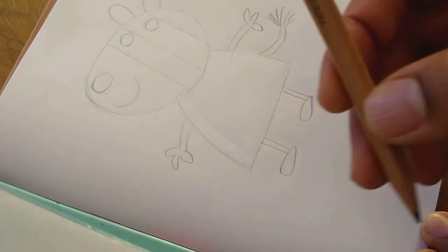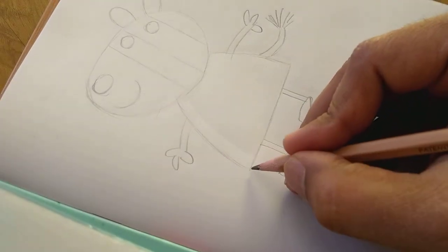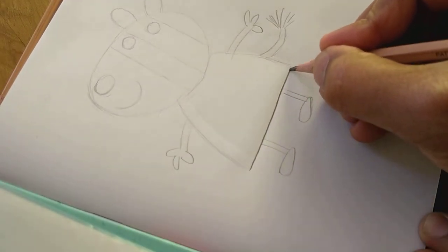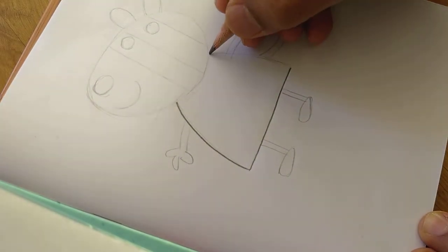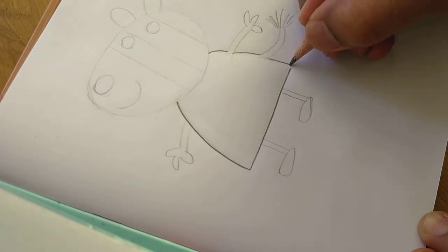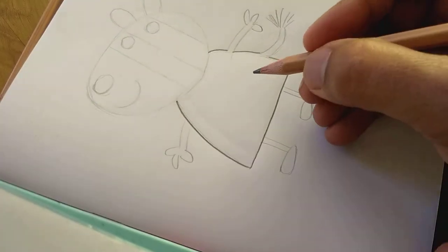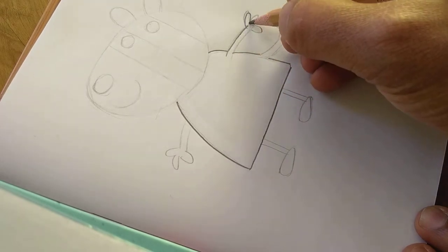Next you can take 2B or HB. I'm taking 2B for your reference. What I'll do is I'll just darken out what I have drawn as rough sketch. Make sure that you darken it properly and no errors, because once you darken it, it's difficult to correct it.